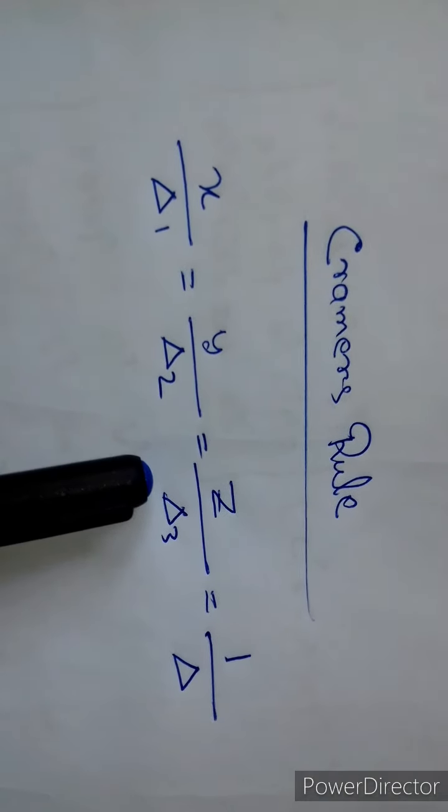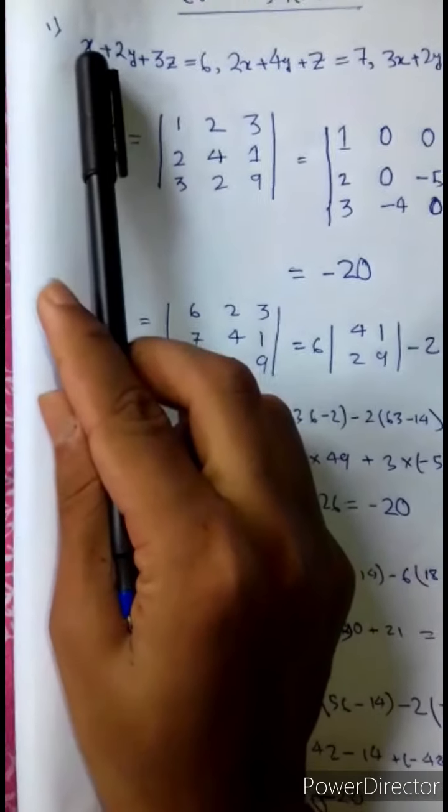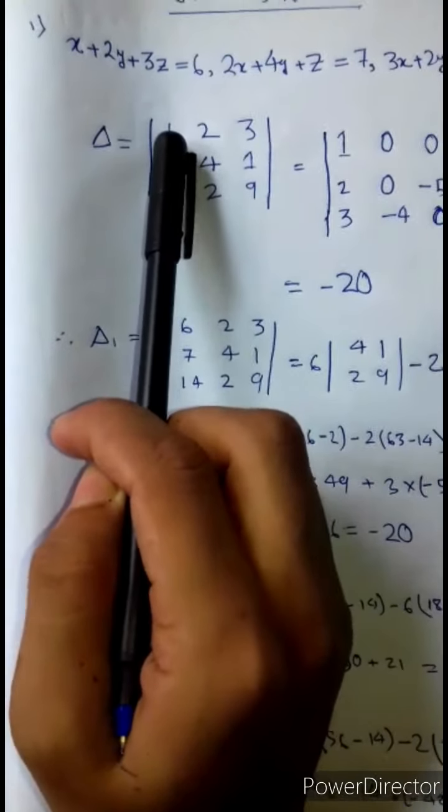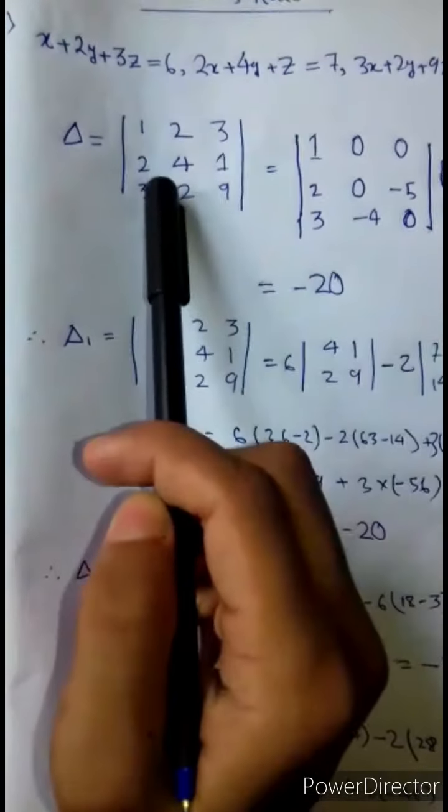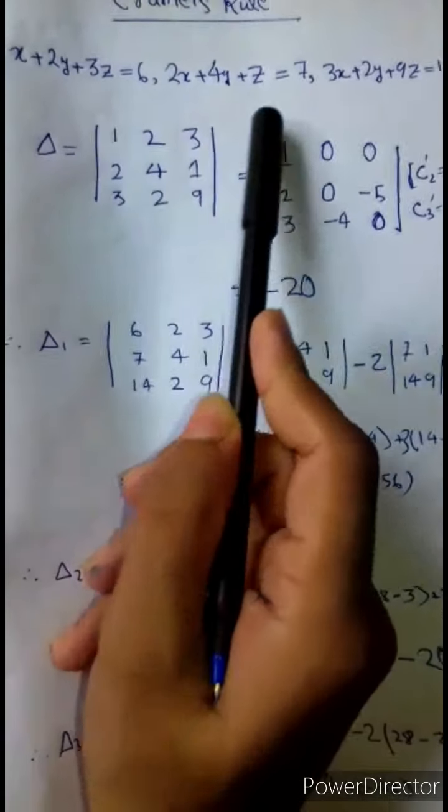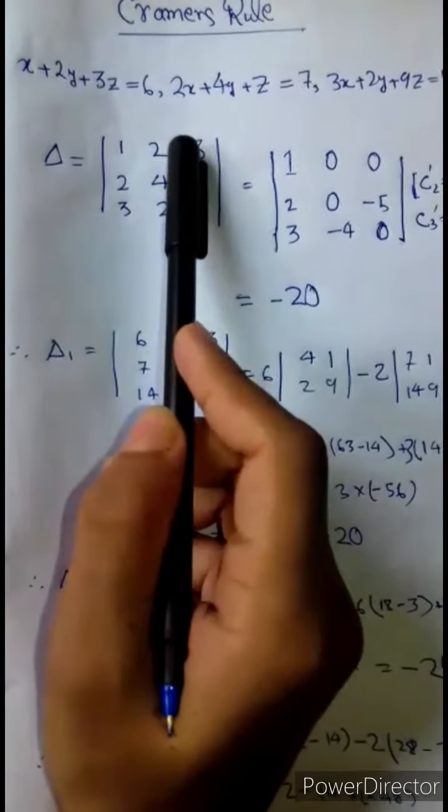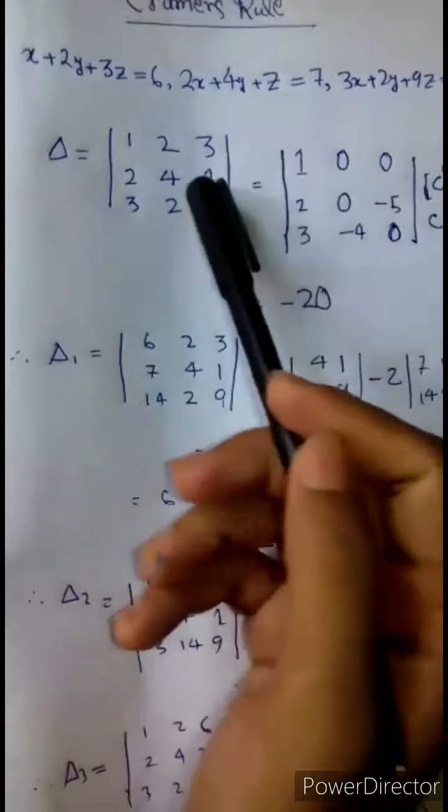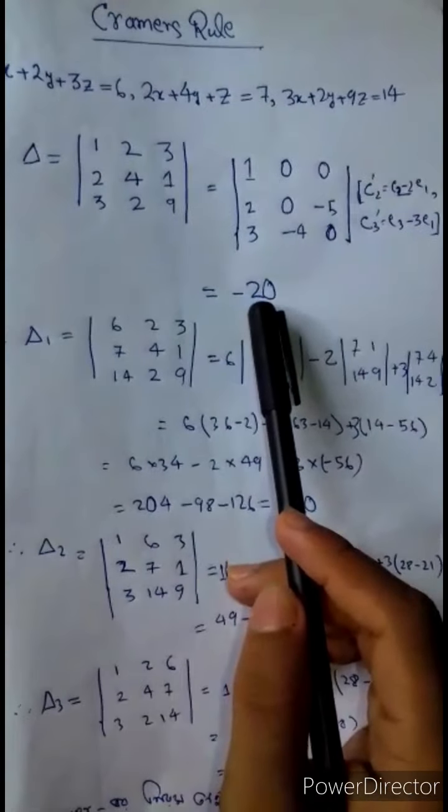Setting up the coefficient determinant: x by del_2, 3x plus 3, 2y plus 4y plus 4, 2y plus 2, 3z plus 3, 3z plus 1, 9z plus 9. We can now determine the value. The determinant equals minus 20.